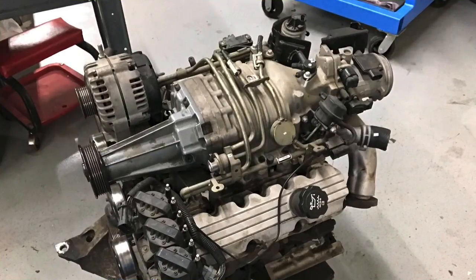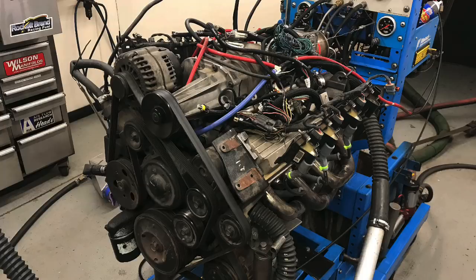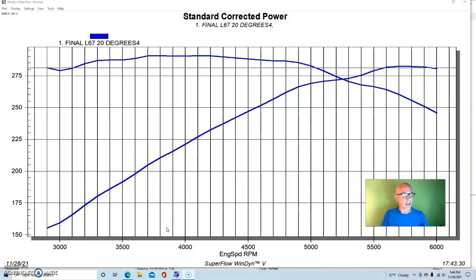Now, we're going to take a look at a comparison between the Series 2 L67 3800 and the Series 3 L32 3800, both with the M90 Supercharger. I get to run both of them with a variety of different modifications. We can compare them step by step along the way. We're going to show you what the comparison is between the two versions of the motor.